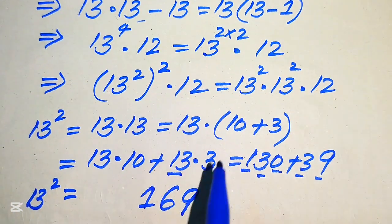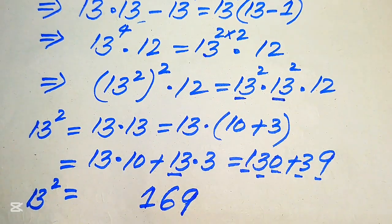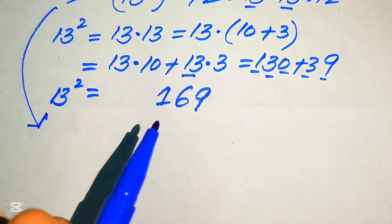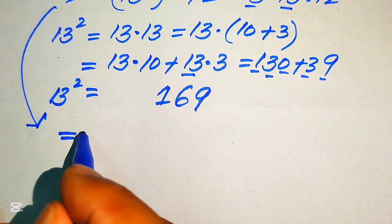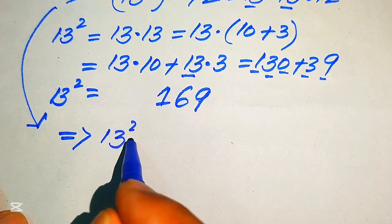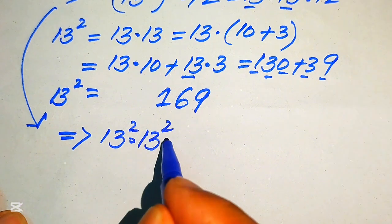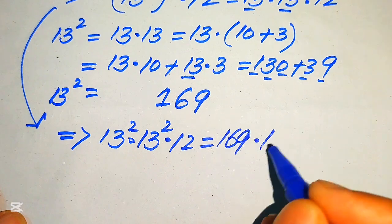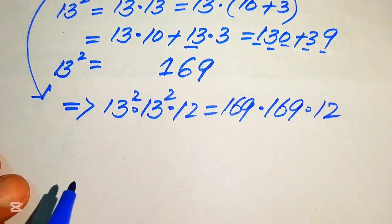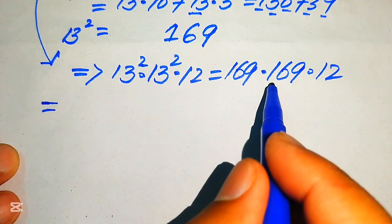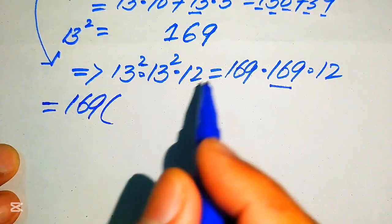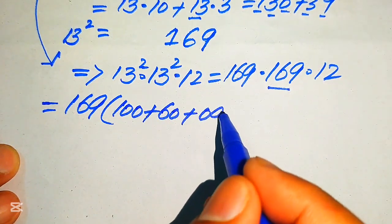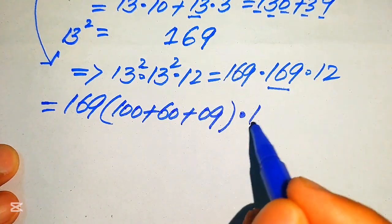We substitute the value of 13 squared (169) into both places, so the expression becomes 169 × 169 × 12. To multiply 169 × 169, we break one 169 as 100 + 60 + 9, giving us (169 × 100) + (169 × 60) + (169 × 9), and the whole result is then multiplied by 12.